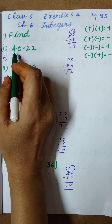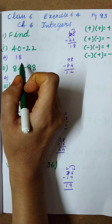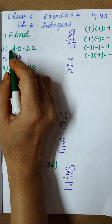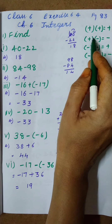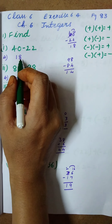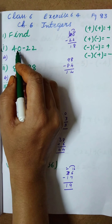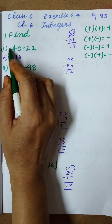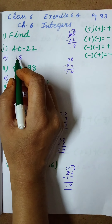In the first question, 40 minus 22. In a previous video I have already explained this — you have to see those videos. Plus into minus: where is the plus for 40? There is no sign, which means we can take it as plus 40. Plus into minus gives minus, so we do subtraction from the biggest to the smallest number. 40 is the biggest, 22 is the smallest, so 40 minus 22 equals 18. The biggest number is 40 and its sign is plus, so the answer is plus 18.